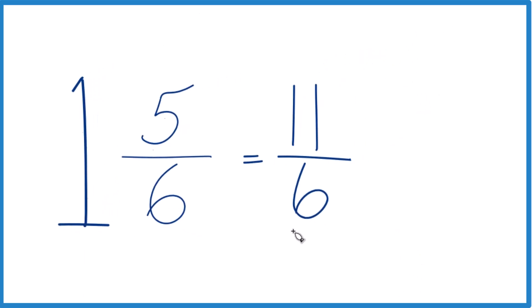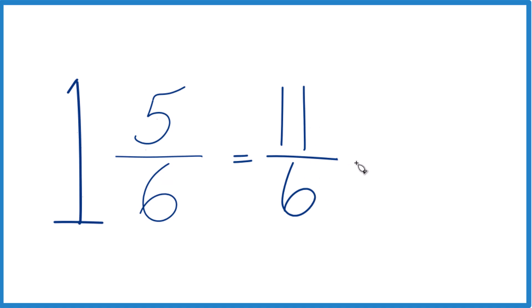You can also check your work here, because 6 goes into 11 just one time. 1 times 6 is 6, so we'd have 5 left over here. And then we bring the denominator across, we get 1 and 5/6. That's what we started with.